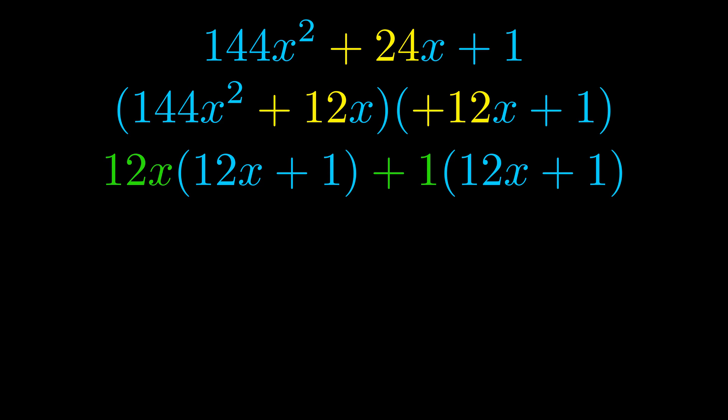Notice also how what remains inside of the parentheses is the same in both cases. The blue values are the same. Those blue values will become one of our factors and we will combine the two green values, the GCFs that we pulled out, to get the other one. And that is our fully factored equation.